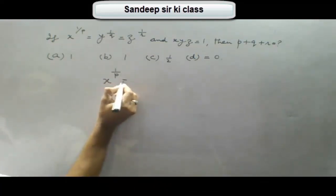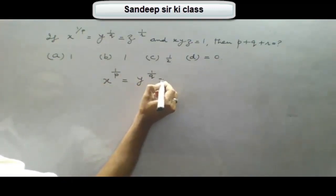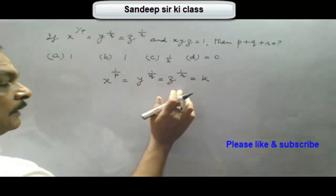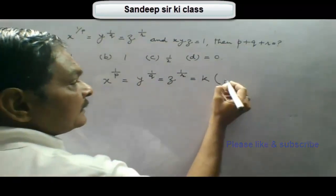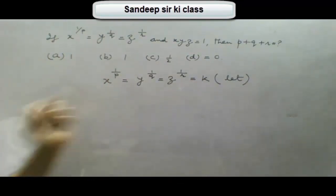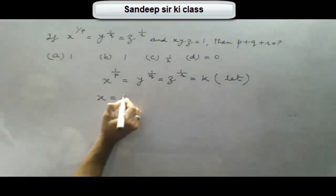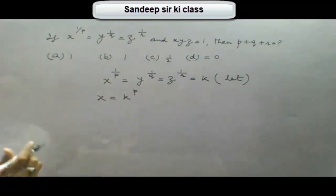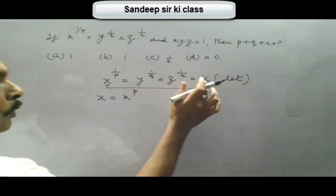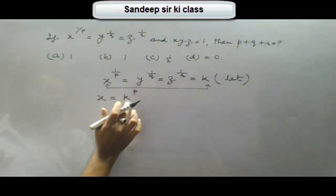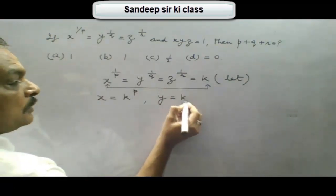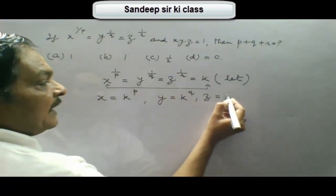Let all these values equal k. If x to the power 1 upon p equals k, then x equals k to the power p. Similarly we find that y equals k to the power q and z equals k to the power r.